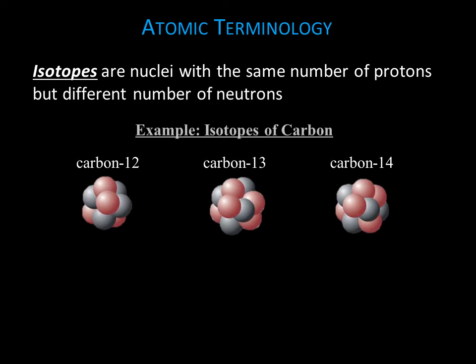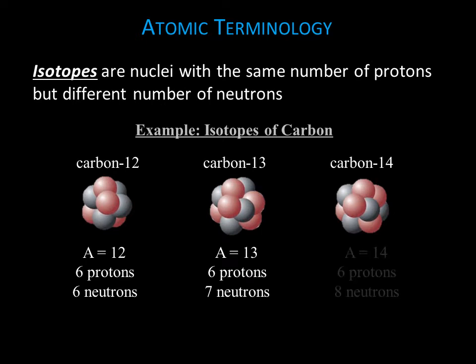The most common isotope of carbon has six neutrons. The atomic mass number is therefore twelve. We call this isotope carbon twelve. Carbon can also have seven neutrons. This isotope is called carbon thirteen. Carbon with eight neutrons is called carbon fourteen.